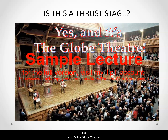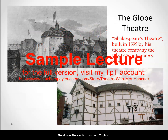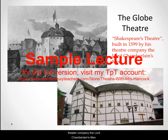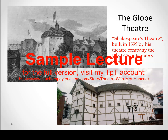And it's the Globe Theatre. The Globe Theatre is in London, England. It was called Shakespeare's Theatre, built in 1599 by his theatre company, the Lord Chamberlain's Men. The Globe Theatre has long since been dismantled, but a replica was built in London in the last century.